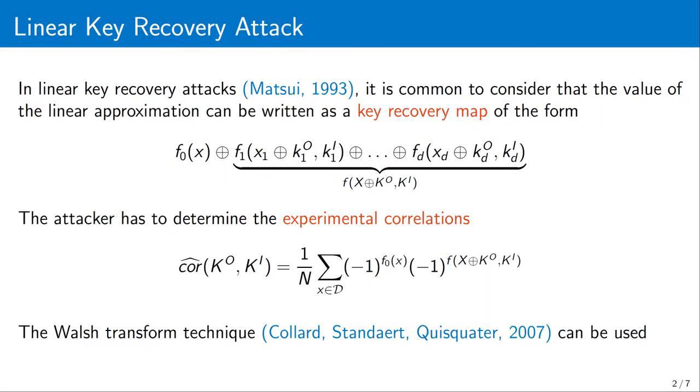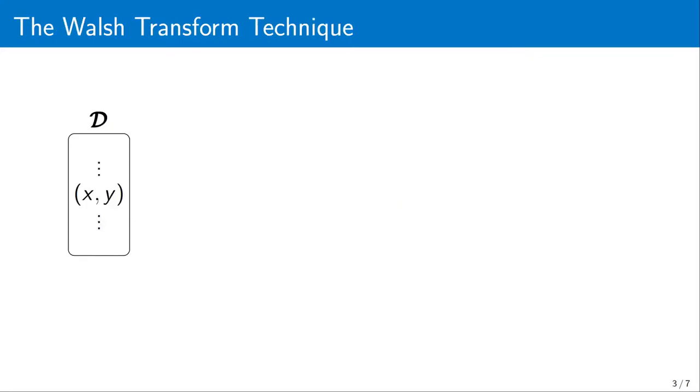One popular way of computing these experimental correlations is the so-called Walsh Transform or FFT technique. Broadly speaking, this technique consists of the following steps.